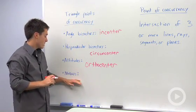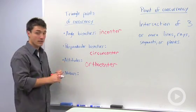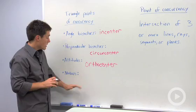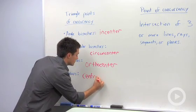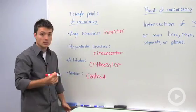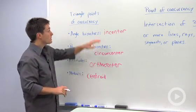The last type is a median. If you construct the three medians of each side—connecting each vertex to the opposite side's midpoint—you're constructing the centroid, which is also the center of gravity or center of mass for the triangle.